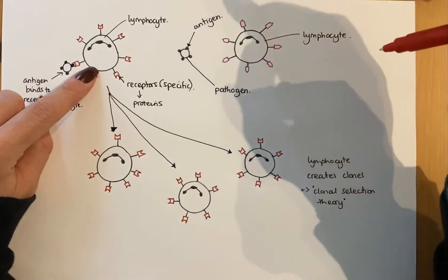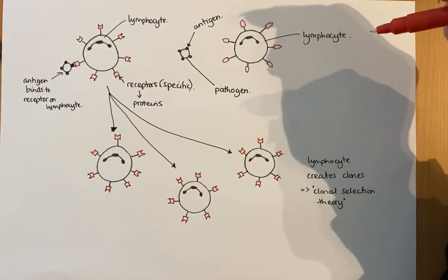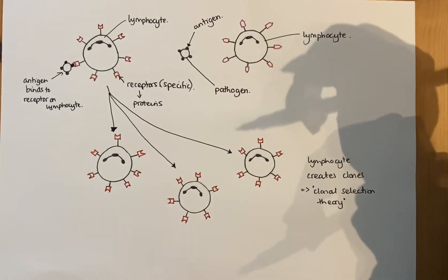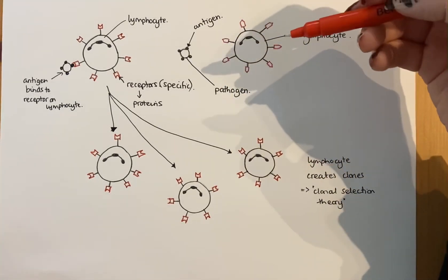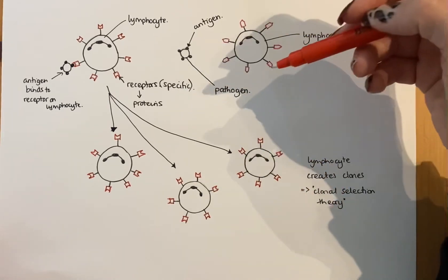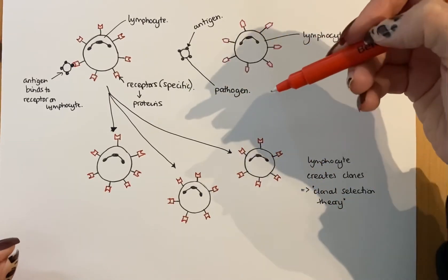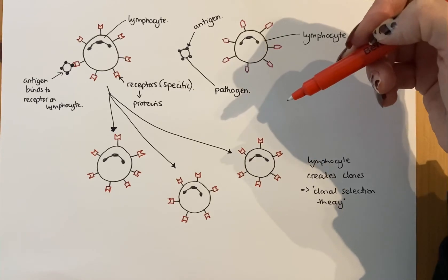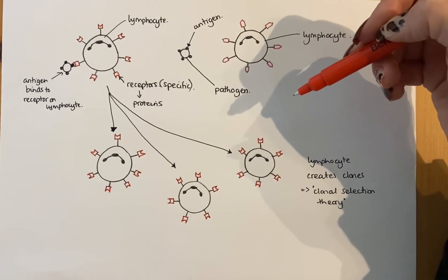You'll have one for the cold sore that you had when you were five. And all those other humongous numbers of different microorganisms that you've ever come across. You will have lymphocytes to match every single one of them. So you have hundreds of thousands of different types of lymphocytes.